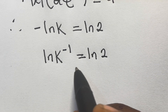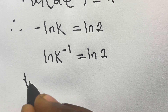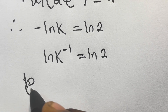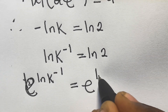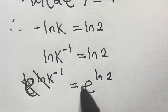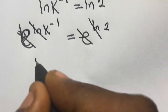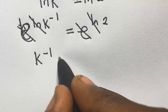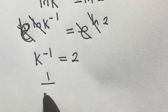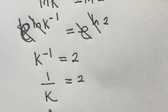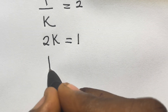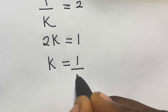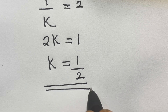To cancel the ln, we introduce exponential to both sides. We have exponential of ln k raised to the power minus 1 equals exponential of ln 2. The exponential and ln cancel, giving k raised to the power minus 1 equals 2, so 1 divided by k equals 2. Cross-multiplying: 2k equals 1, and dividing both sides by 2, we get k equals 1 divided by 2.